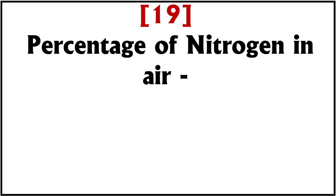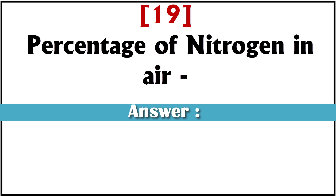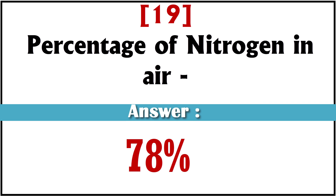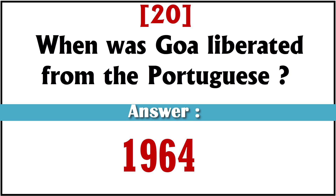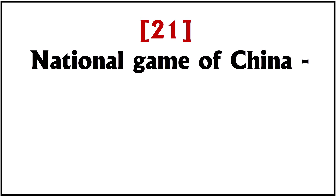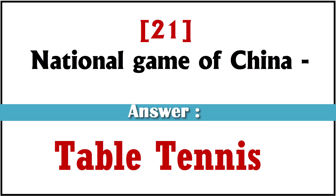Percentage of nitrogen in air? 78%. When was Goa liberated from Portuguese? 1961. National game of China? Table tennis.